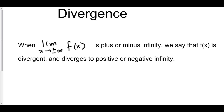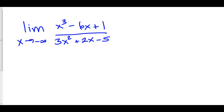When the limit as x goes to plus or minus infinity of f of x is positive or negative infinity, we say that f of x is divergent — that f of x diverges to either positive infinity or to negative infinity. Here are some divergent functions.